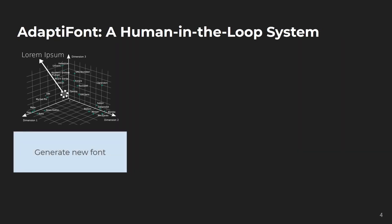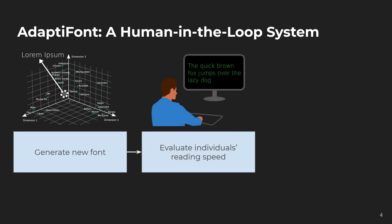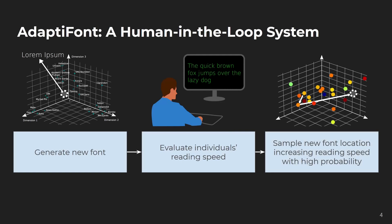First of all, we need to be able to parametrically generate new fonts as freely as possible with few restrictions. Once we have created such a new font, we could present it to the reader and measure the reading speed it elicits. Based on the measured reading speed, we need to generate a new font in such a way that it increases reading speed with high probability. This process could be repeated continuously to adjust fonts seamlessly for the individual reader across contexts and across time.